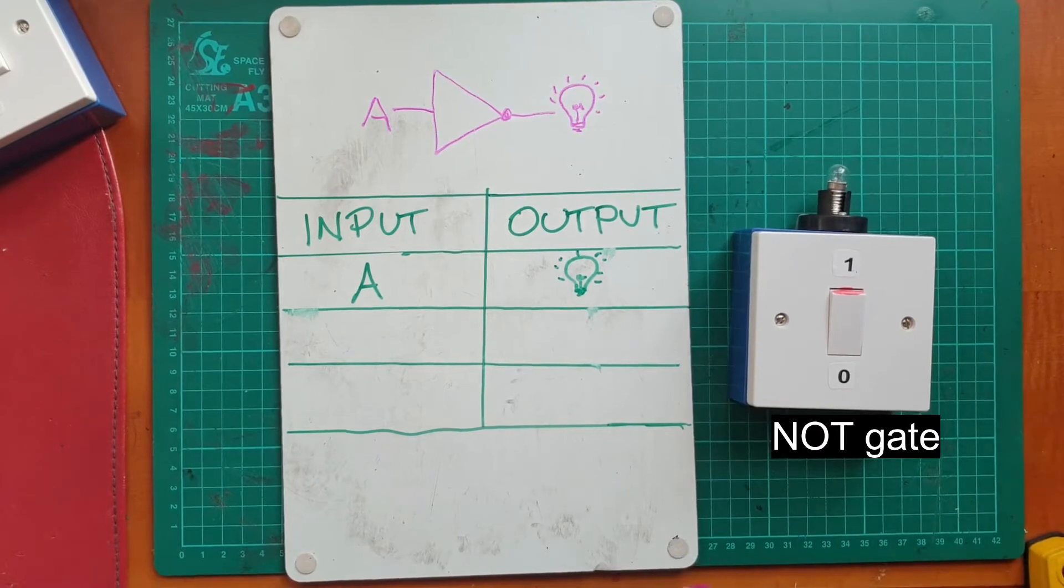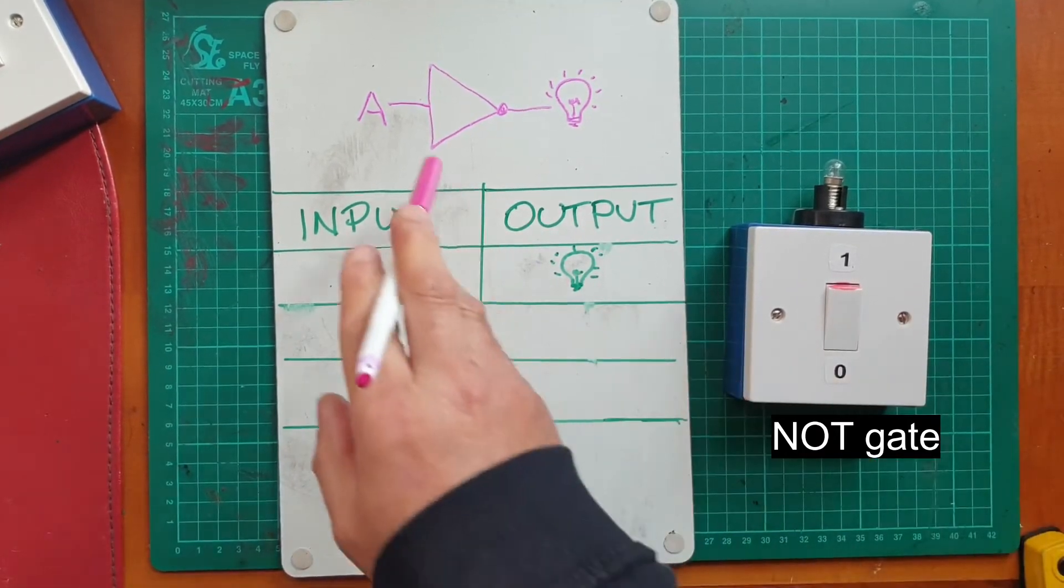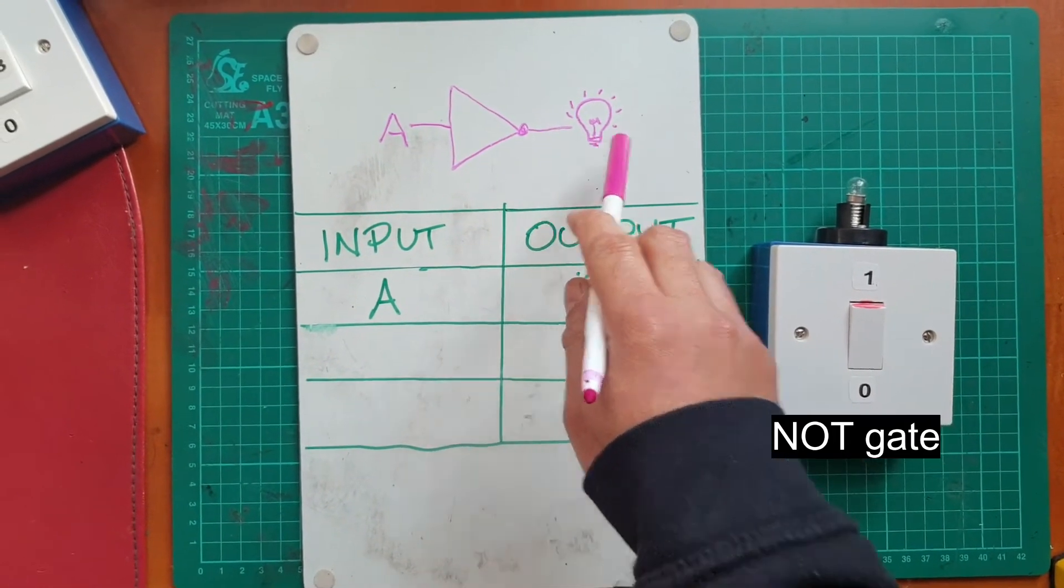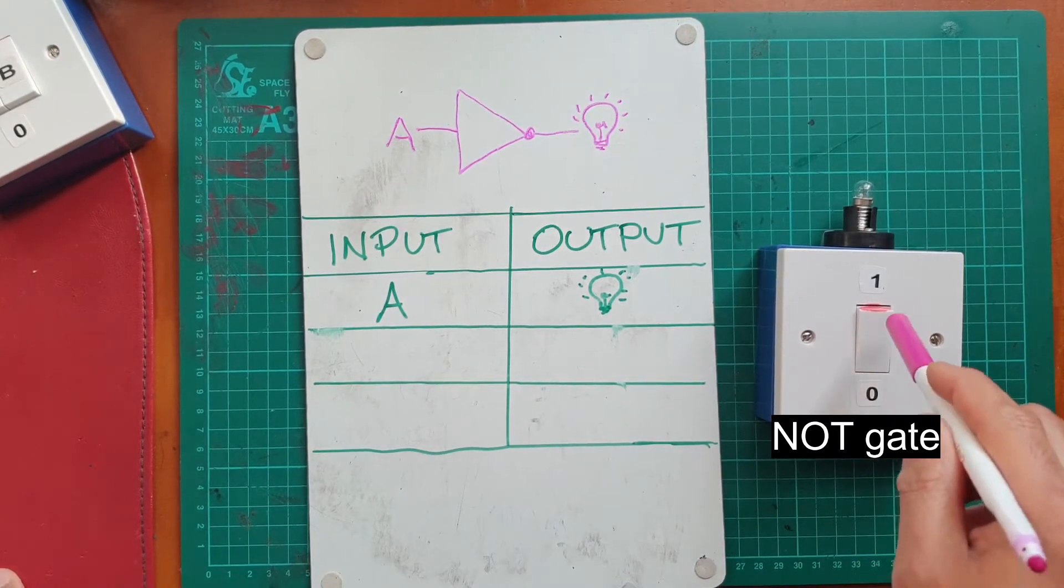Last but not least, let's take a look at the NOT gate. So in this case we only have one switch, so one input, so we'll call that A. And again, the output represented by the bulb. So with the switch on, the output is off.